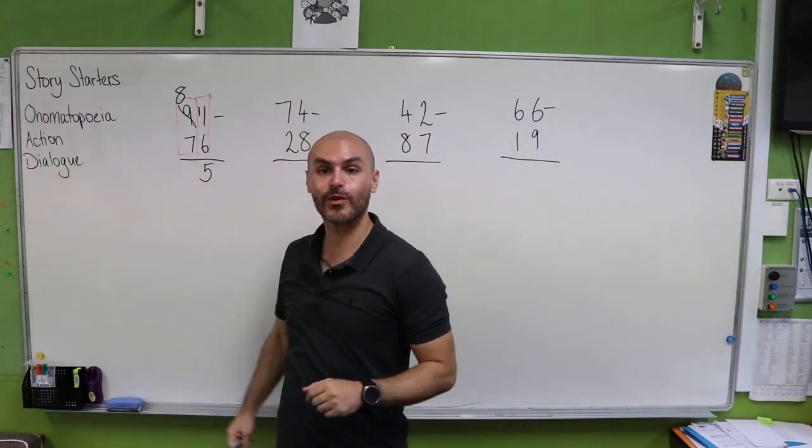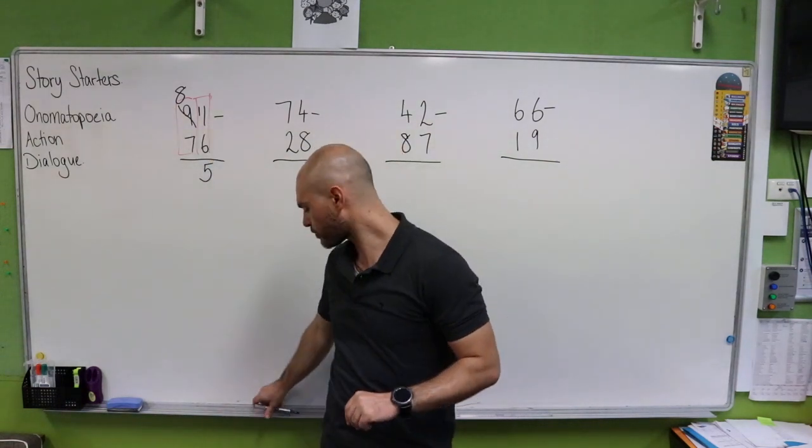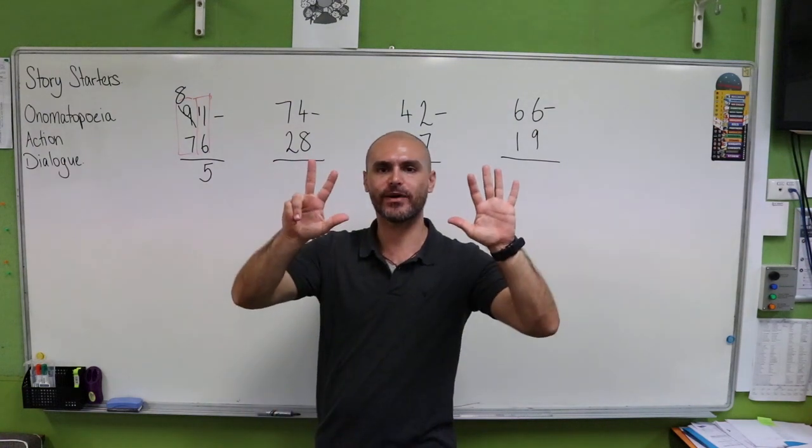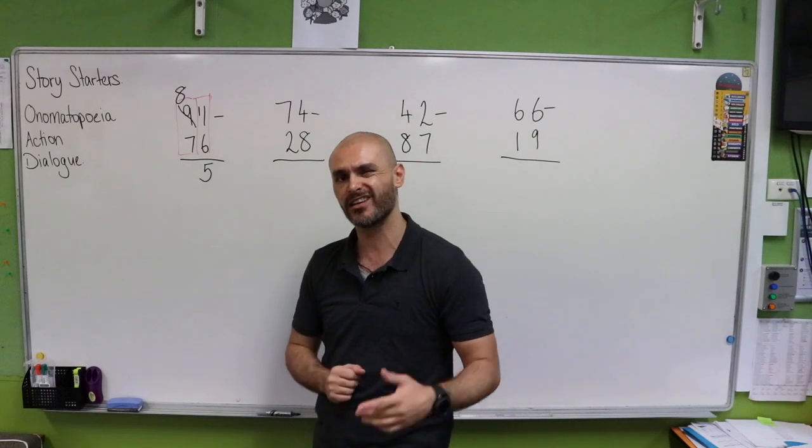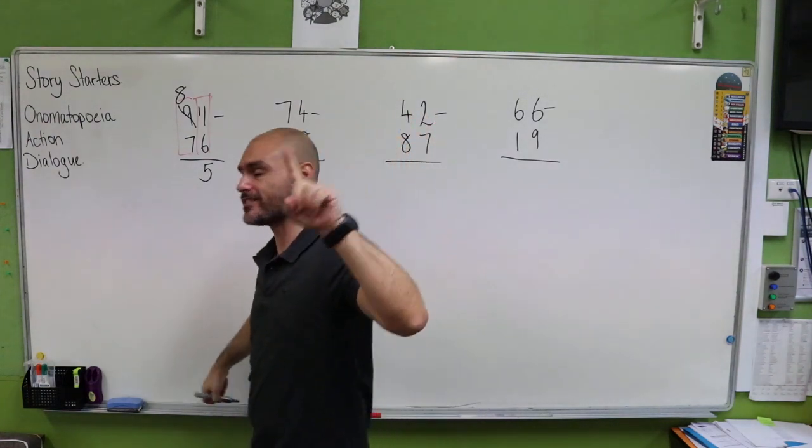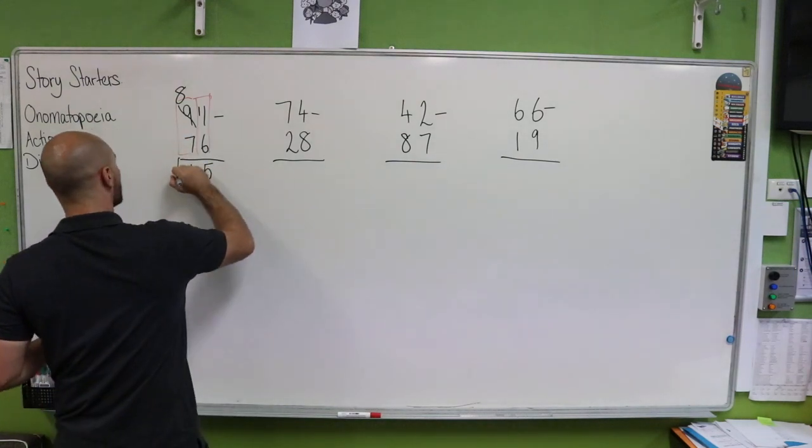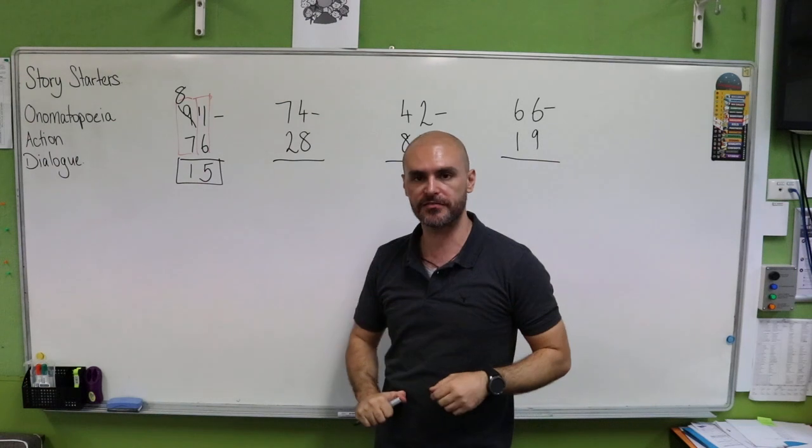Now jumping to our tens, we have eight take away seven. And what's eight take away seven? So we're going to count from seven, see how long it takes us to get to eight. So we have seven, eight. Our answer is one. So our final answer for our first problem is 15.